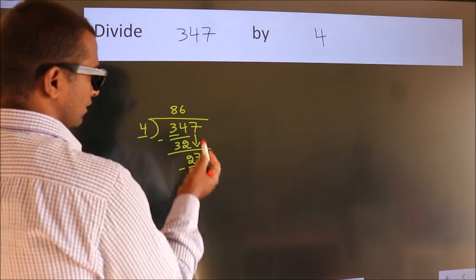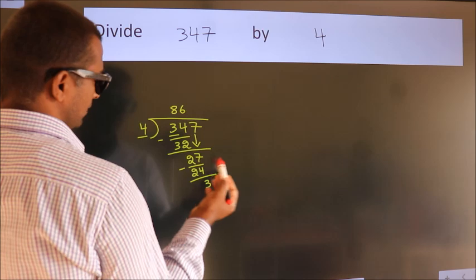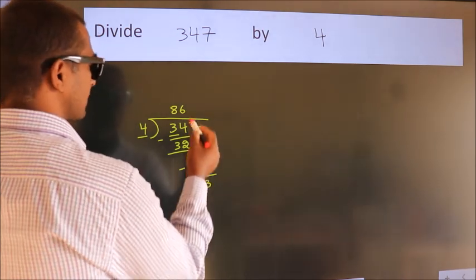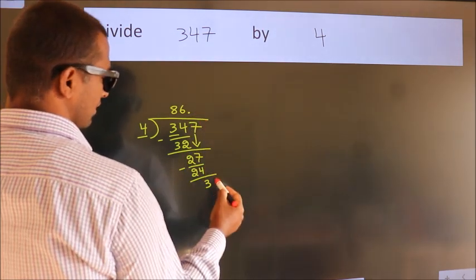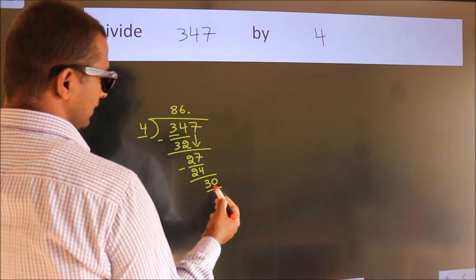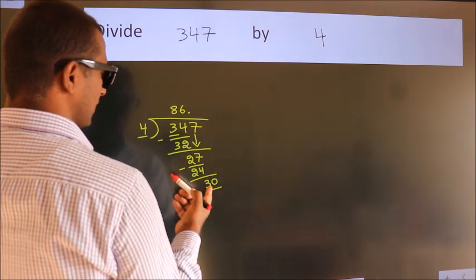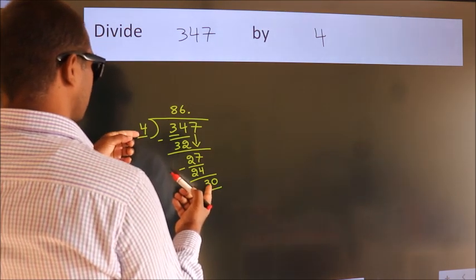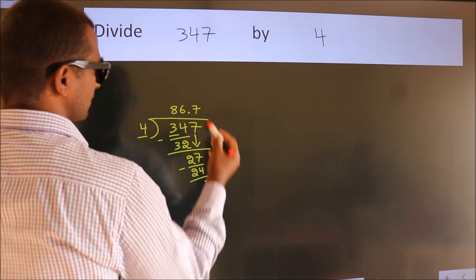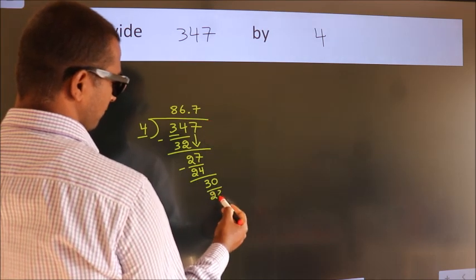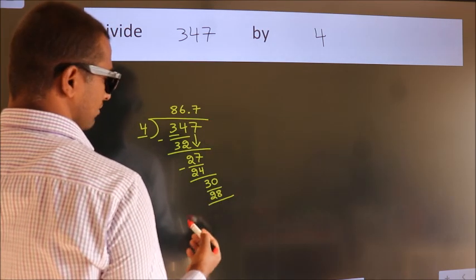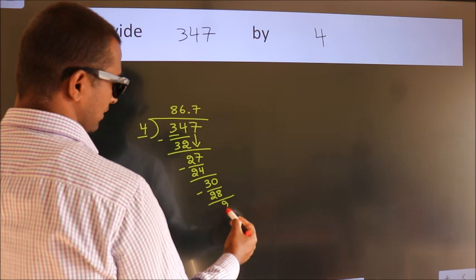After this, no more numbers to bring down. So what we do is, we put a dot and take 0. So, 30. A number close to 30 in the 4 table is 4 times 7, which is 28. Now we subtract and get 2.